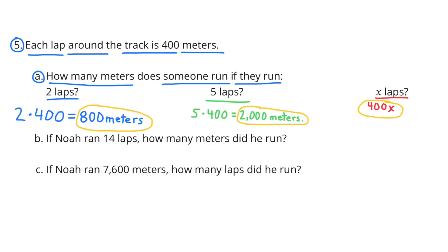Number 5. Each lap around the track is 400 meters. A. How many meters does someone run if they run 2 laps? 1 lap is 400 meters, so 2 laps is 2 times 400, or 800 meters. For 5 laps, that's 5 times 400, or 2,000 meters. And for X laps, that would be 400 times X, or 400X.